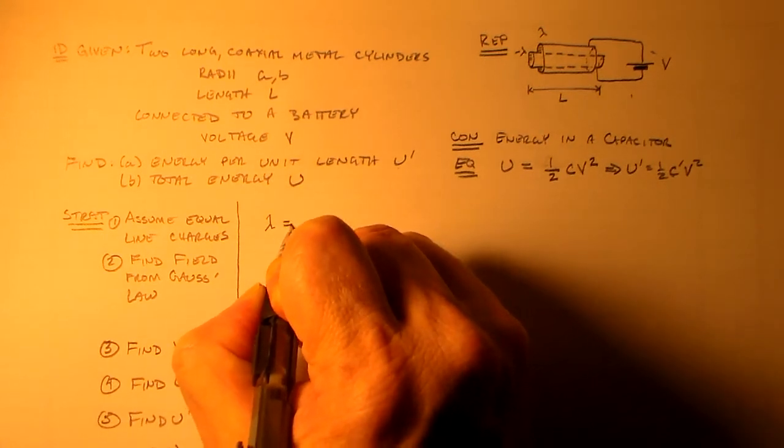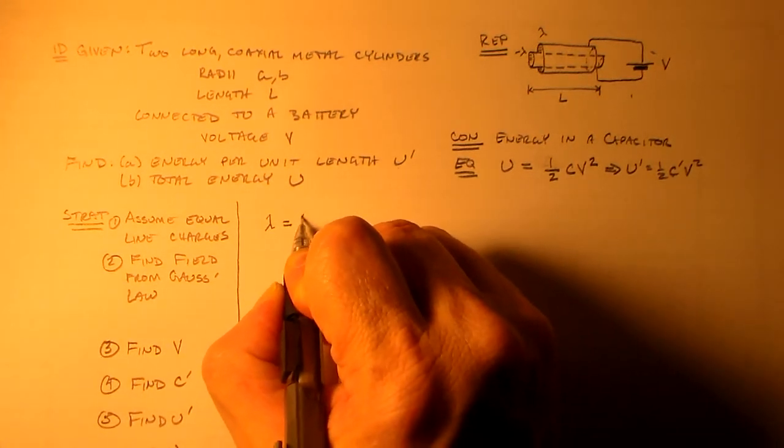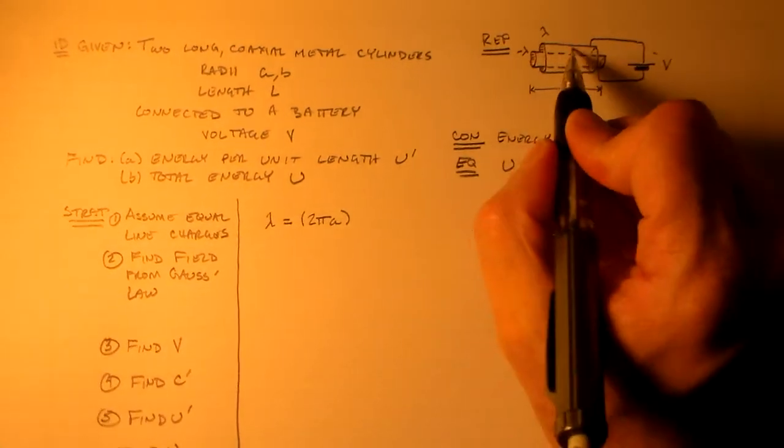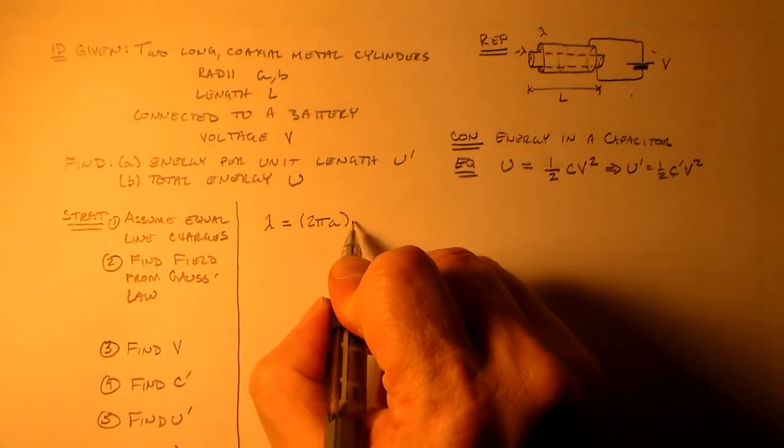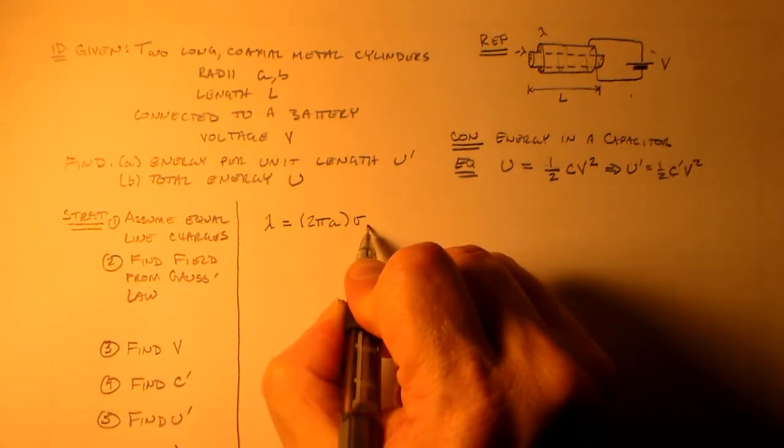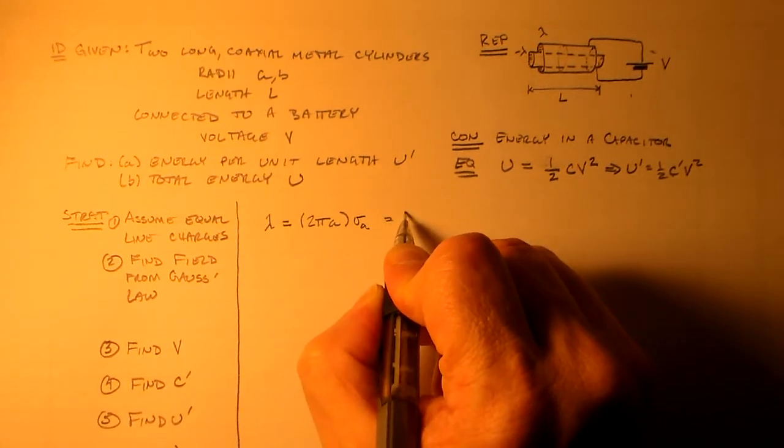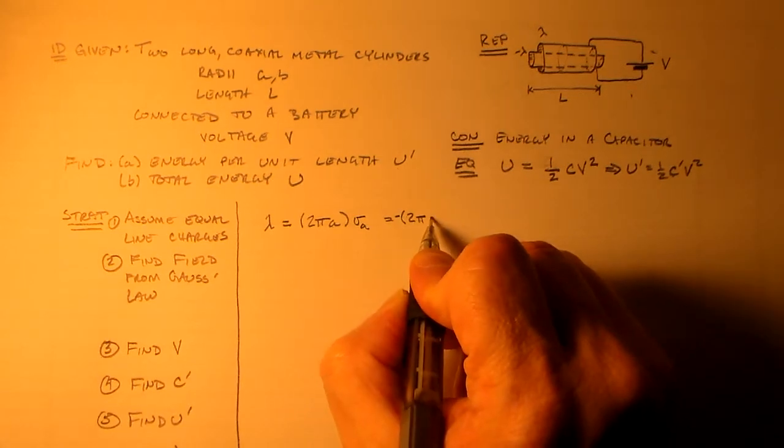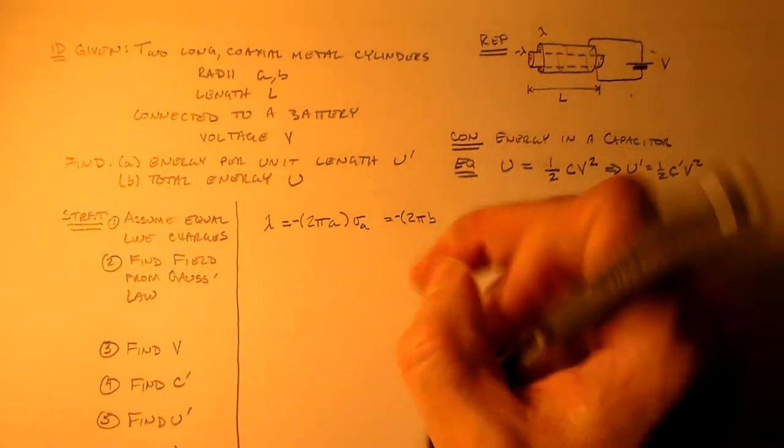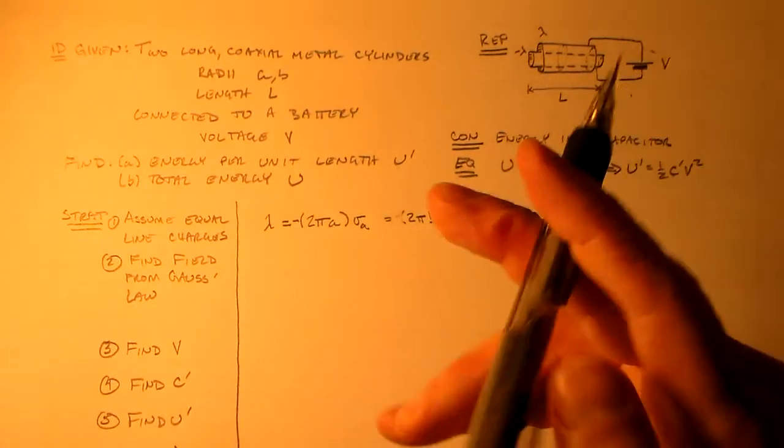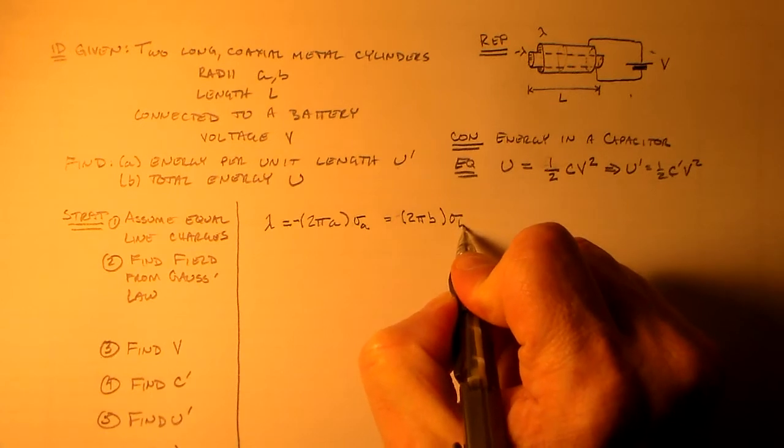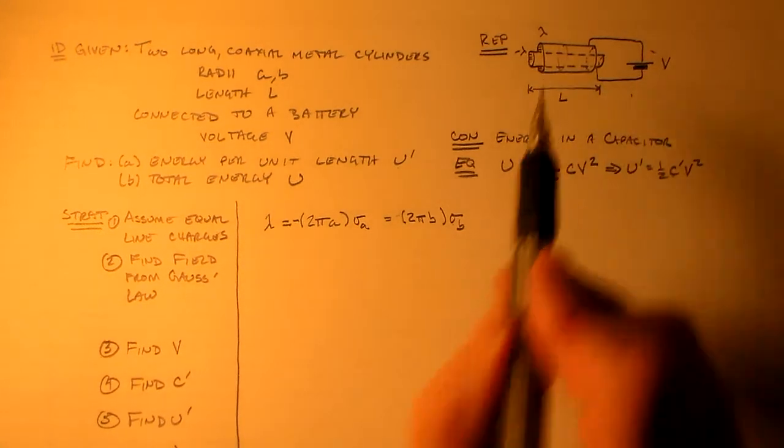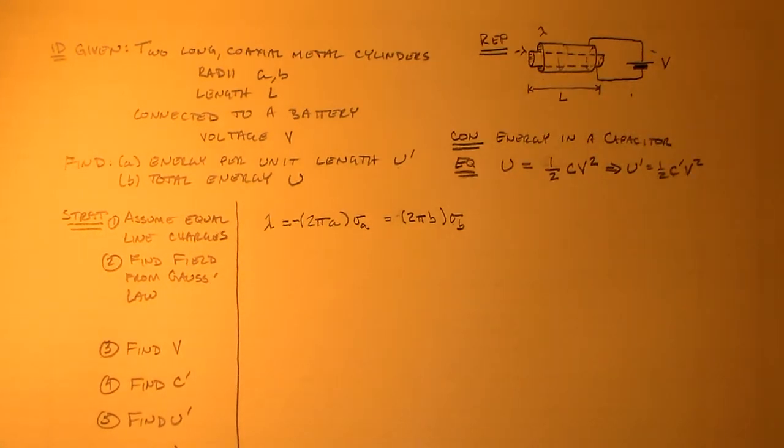So we have equal line charges. And so that's basically an integral around the circumference of this thing times some sigma. So in this case, sigma A for the interior. And like I said, they're equal. So, actually, I guess they're equal and opposite. So equals minus 2 pi, you know, this one's minus, so this one's plus. It's equal to 2 pi B times sigma B. Okay, so that's just, we'll use sigma B because these are sheets to find the field. All right, simple enough.